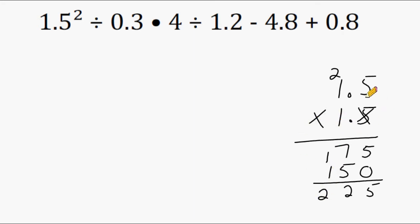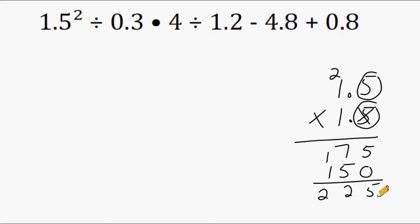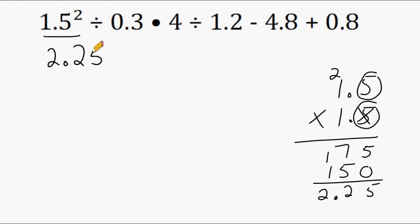Now remember, if you have a decimal in the problem, you also need one in the answer. After this decimal we have one place value, and we have one place value after this decimal as well, for a total of two place values. So we go to the answer and skip over the last two place values and put our decimal where it belongs. So 1.5 squared is 2.25, and right underneath this part of our expression we write the answer 2.25.